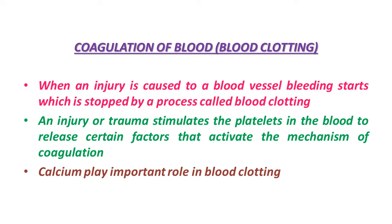You have a clear idea about blood as a connective tissue in the human body — its properties, composition, and role. Let's discuss the process of coagulation of blood, or blood clotting. We have all experienced that when any part of the body is cut or injured, for example if we cut our finger, the wound does not continue bleeding for a long time. Usually the flowing blood stops after some time.